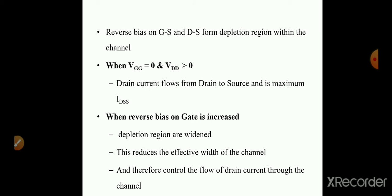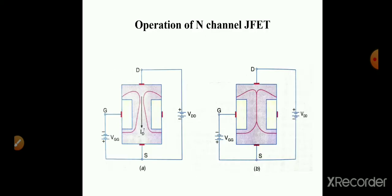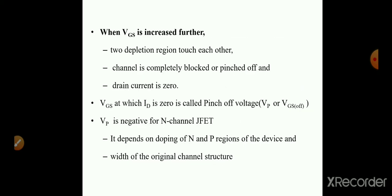Maximum current flows when VDD is greater than 0 and VGG equals 0. On increasing the reverse bias voltage at the gate terminal, the depletion region becomes more widened, reducing the effective width of the channel, and therefore we can control the flow of drain current. When VGG is increased further, the depletion regions touch each other, as shown in figure B, and the channel is completely blocked or pinched off.